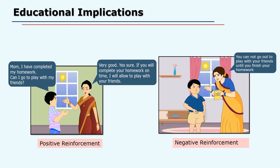Now, next time when the child wants to go out to play, the mother will remind him of that unpleasant situation where he would be doing homework while his friends are playing. She will say: do the homework now and go to play, then I will not detain you at home. When the child is aware of that unpleasant situation being removed and that he will be allowed to go out and play, that prospect will strengthen the behaviour of doing homework earlier and then going out to play.